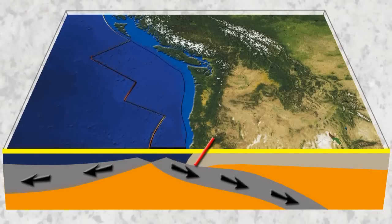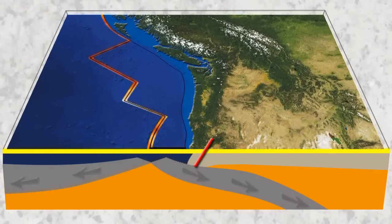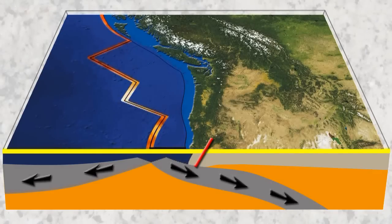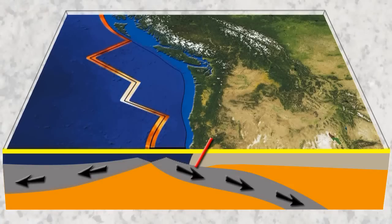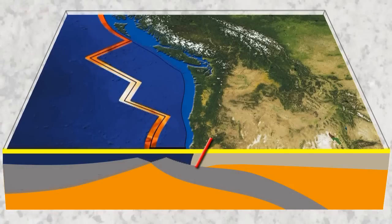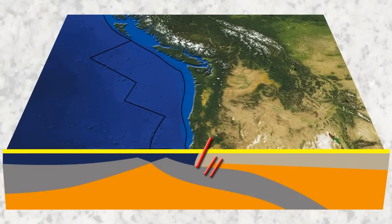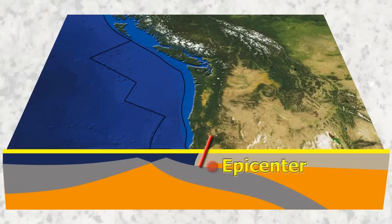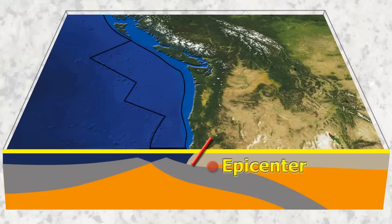Here we have the Juan de Fuca plate being subducted under the North American plate. As it subducts under the North American plate, it causes the lip of the North American plate to get pulled back. The motion continues until the two plates get stuck. Pressures build up until the plates slip — this is the earthquake. The lip of the North American plate will flip back up as the pressure is released. It is this flipping back up of the plate that pushes the water above and up, causing a tsunami.